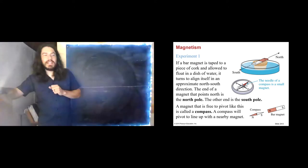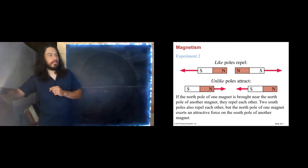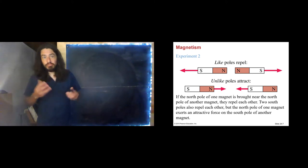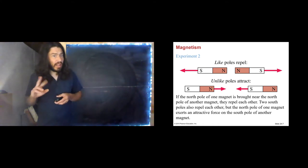So a magnet that is free to rotate like this, we call it a compass. Like poles repel and unlike poles attract. I already demonstrated that. That's similar to the rules for electricity, isn't it? So we see that there are some real similarities here. There are also some real differences.